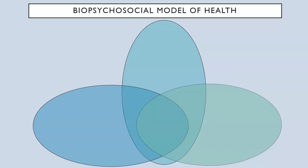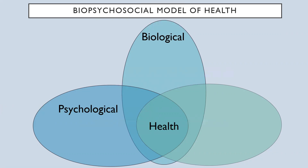When we talk about successful aging, we typically think of health, and when we think about health, we tend to focus on two broad areas: biological and psychological. Biological health has to do with our physiological pathology. Examples include our physical health, disability, genetic vulnerabilities, immune function, stress reactivity, and medication effects.